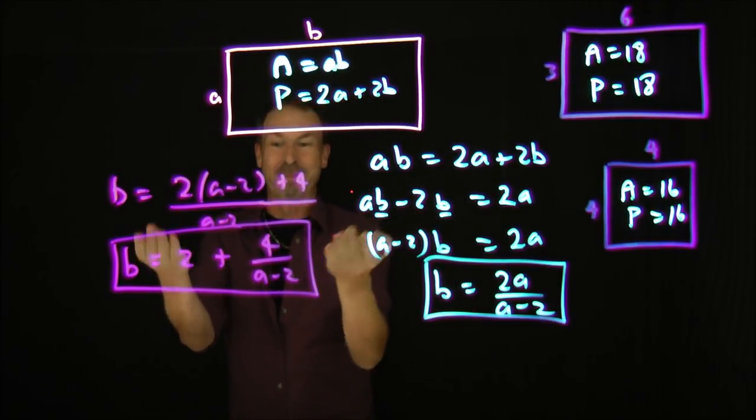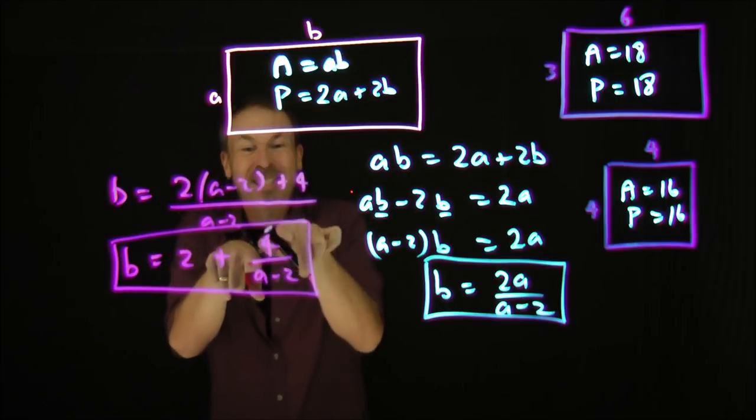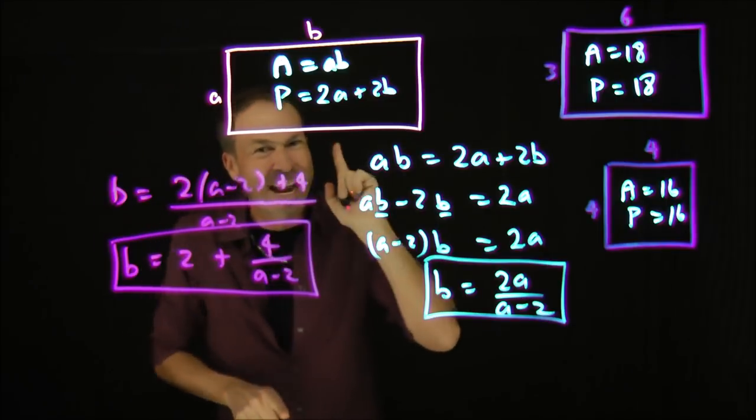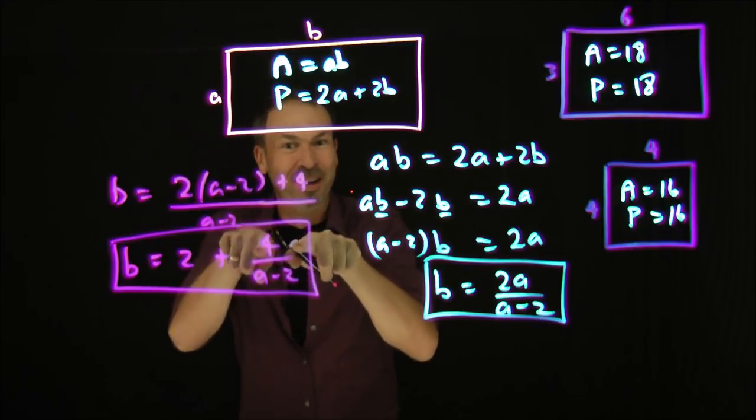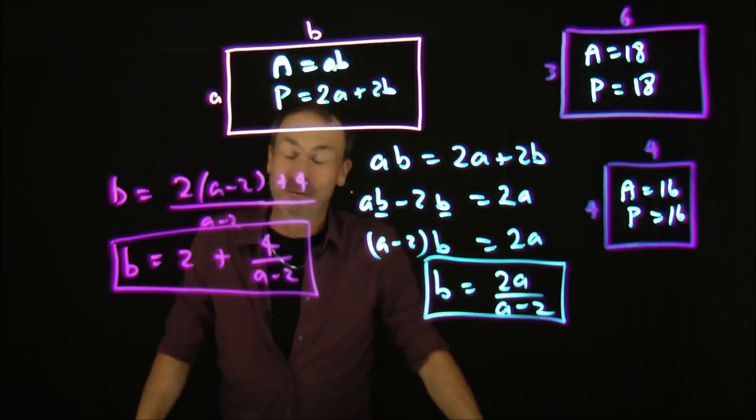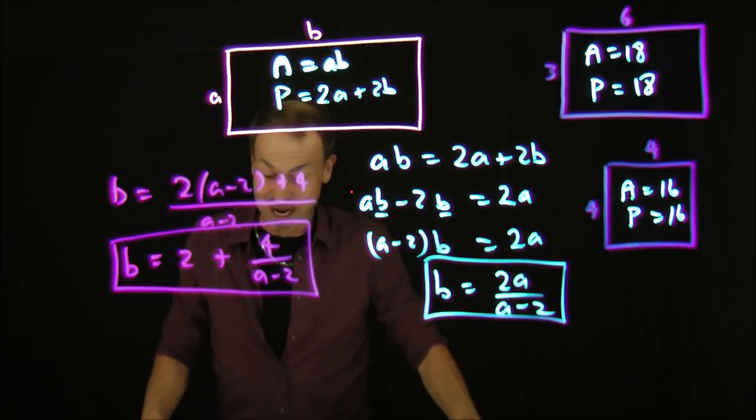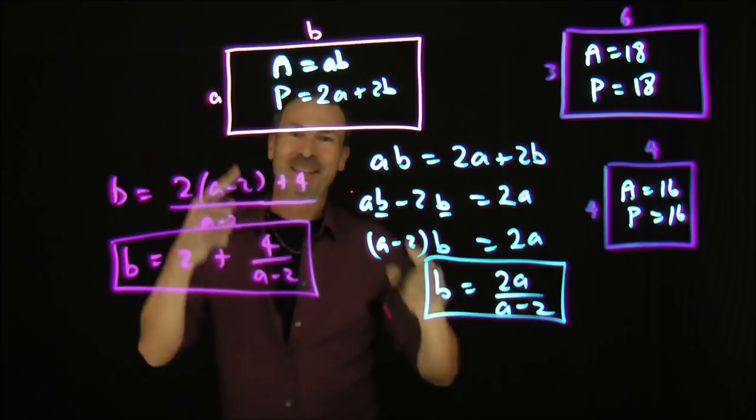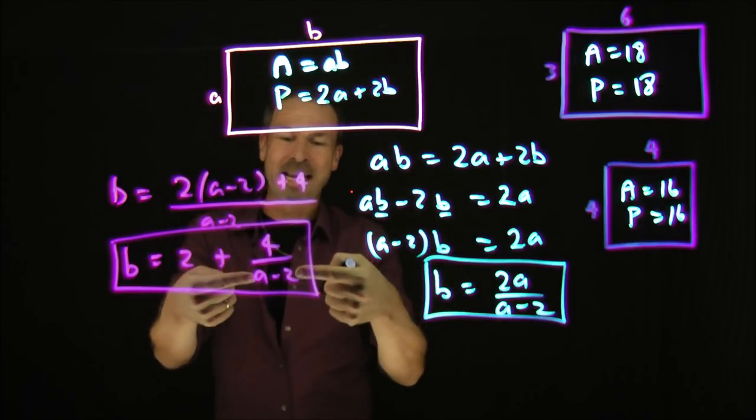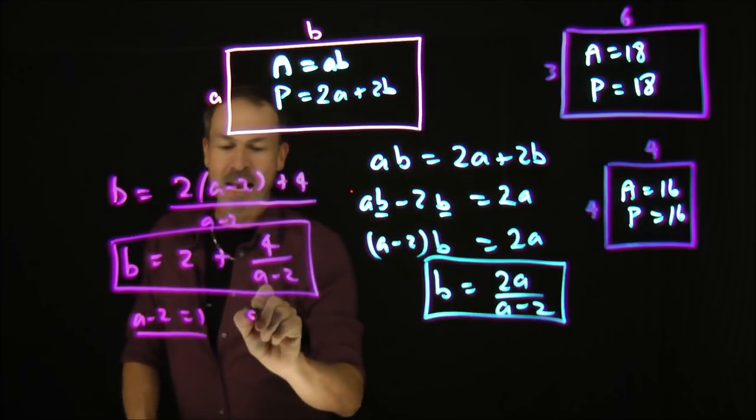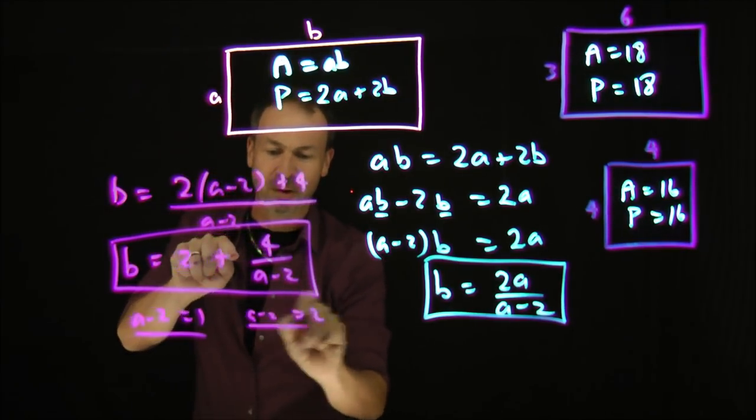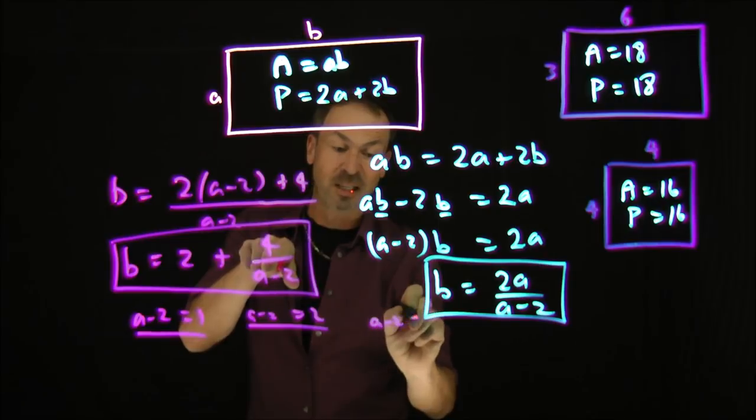I've got a whole number plus something that looks like a fraction unless that bottom has to be a multiple of four. Well, I know the factors of four. The factors of four are one, two, and four. So that tells me for this to be a whole number, I need A minus two. I've got three possibilities. It could either be one or A minus two could be two, or A minus two could be four.